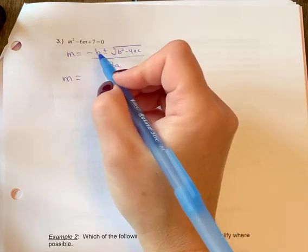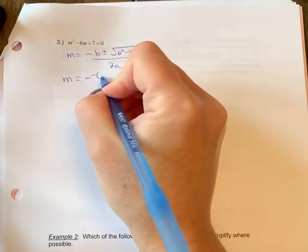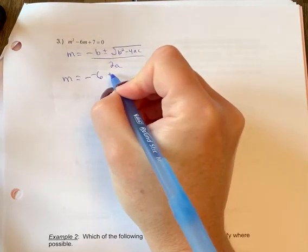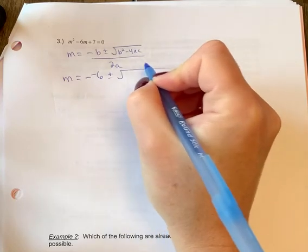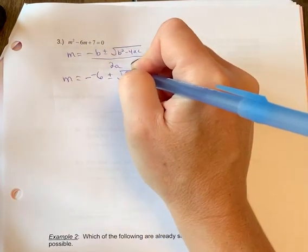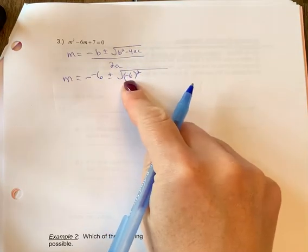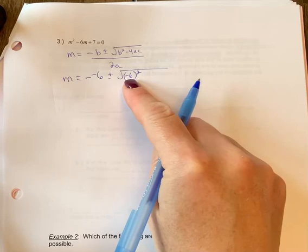All right, so we're going to plug in negative b, and then the b value is negative. So you're actually going to have two negatives, so that will end up being a positive, which if you wrote positive right away, that's okay too. Negative 6 squared. What really matters is I want to see that substitution step, but I want to make sure you have the negative 6 in brackets because you're squaring the negative sign along with that.